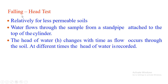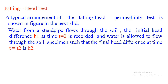The falling head test is used for relatively less permeable soils — fine-grained soils where water collection takes much time. In this test, water flows through the sample from a standpipe attached to the top of the cylinder. The head of water h changes with time as flow occurs through the soil. At different times the head of water is recorded, and based on the head loss and time, the flow of water through the soil mass is determined.